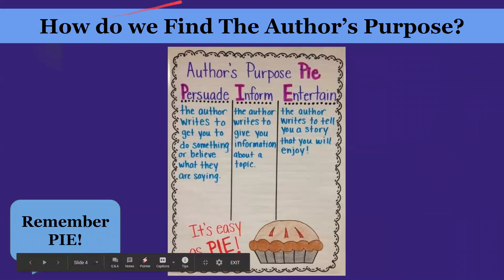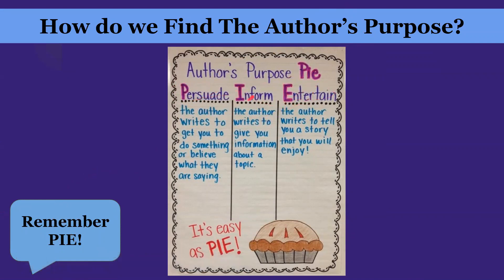So how do we find the author's purpose? Remember PIE — an easy acronym. Persuade, inform, entertain — P-I-E. For persuade, the author writes to get you to do something or believe what they are saying; it's an argument. For inform, the author writes to give you information about a topic, with none of the author's opinion included. And for entertain, the author writes to tell you a story that you will enjoy — it doesn't always have to be fiction.